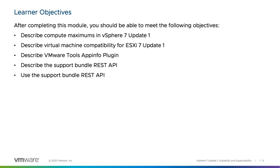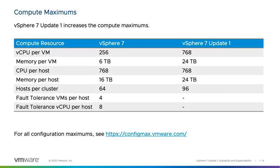vSphere 7 Update 1 increases several of the compute maximums. The number of vCPUs per virtual machine increases to 768. The maximum amount of memory per virtual machine increases to 24 terabytes. The maximum memory per host also increases to 24 terabytes, and the maximum number of hosts per cluster increases to 96.